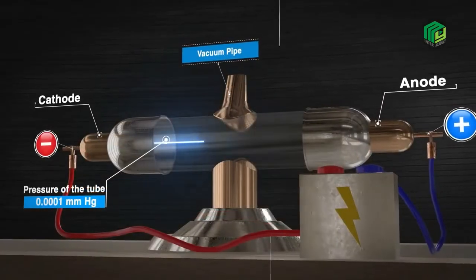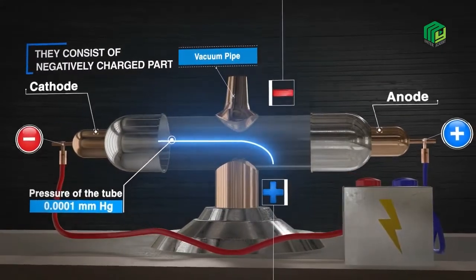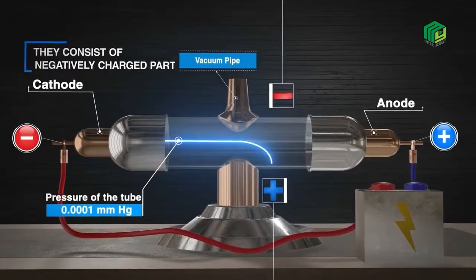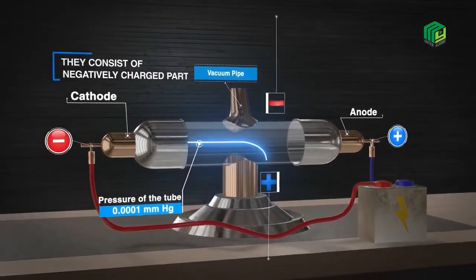Third, in the presence of an electric field, the rays are deflected towards the positive plate. This confirms that cathode rays consist of negatively charged particles.